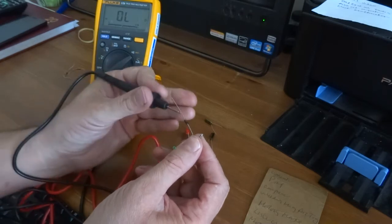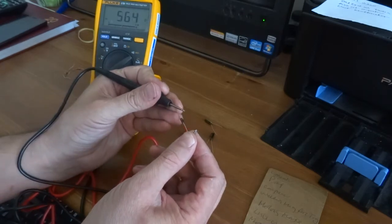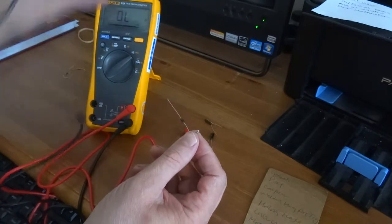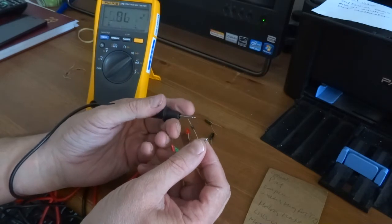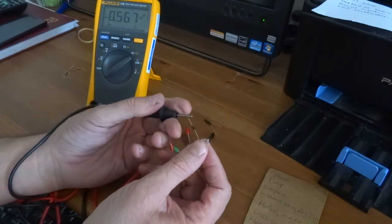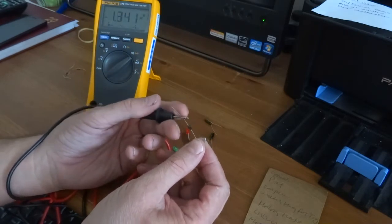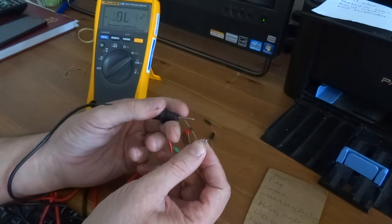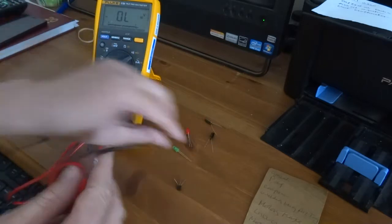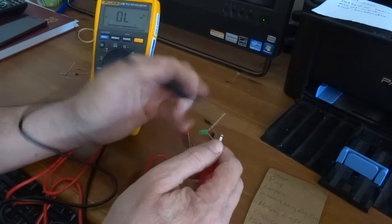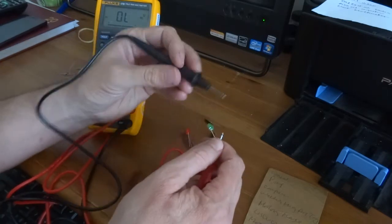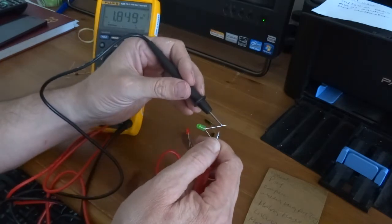Quite fast, and it beeps. That's a brilliant feature on a Fluke. You don't even have to look, you can just test loads of diodes and know they work. Miss that when you're using a cheaper multimeter. That diode's lit up.